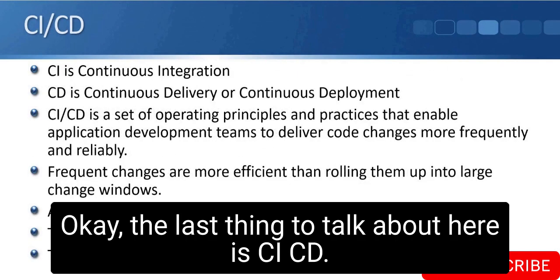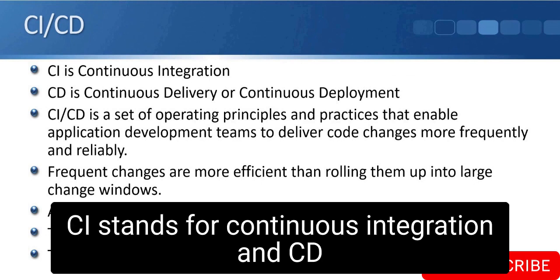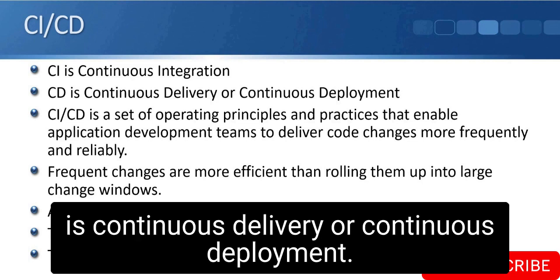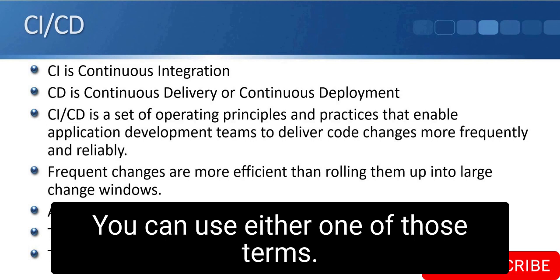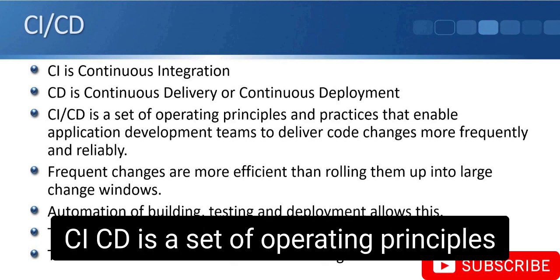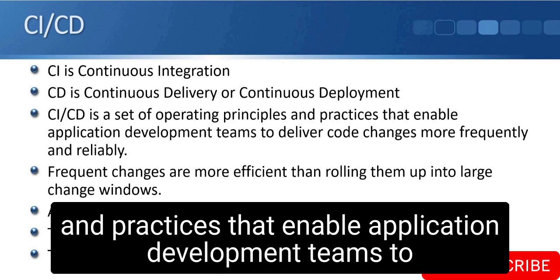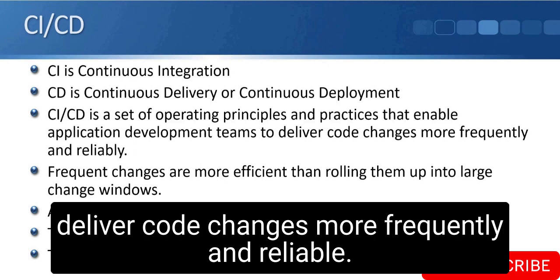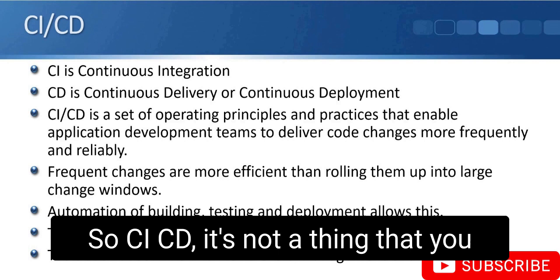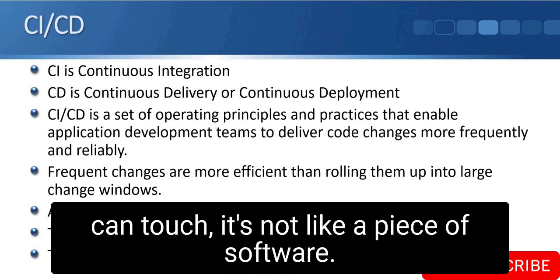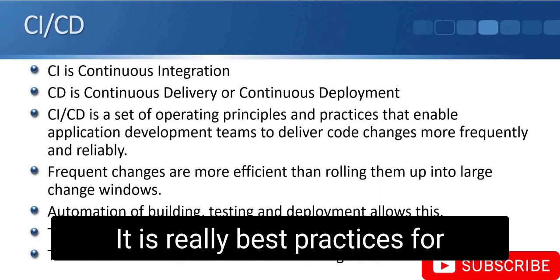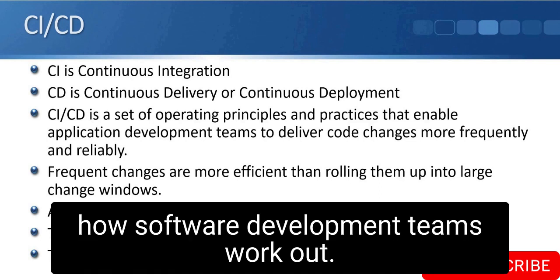The last topic is CI/CD. CI stands for continuous integration, and CD is continuous delivery or continuous deployment — both terms are used. CI/CD is a set of operating principles and practices that enable application development teams to deliver code changes more frequently and reliably. It's not a piece of software you can touch; it is really best practices for how software development teams work.